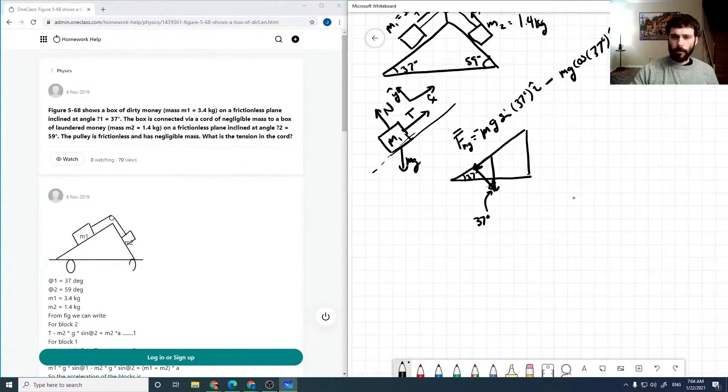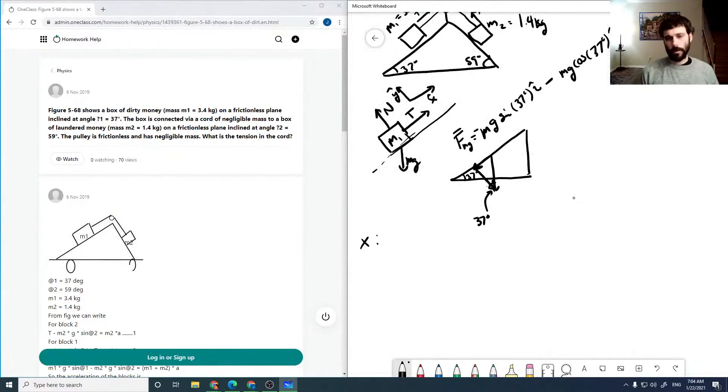Looking at my x and y components, in the x direction we have f net x is equal to my tension is in my positive x direction minus mg sine 37, and that's going to equal m1 times my acceleration in my x direction. We haven't been told whether there is an acceleration, but we should probably assume one.